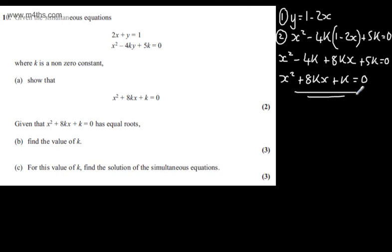So that's the first part then. It now says given x squared plus 8kx plus k equals 0 has equal roots, in part b we're asked to find the value of k. The question carries three marks.